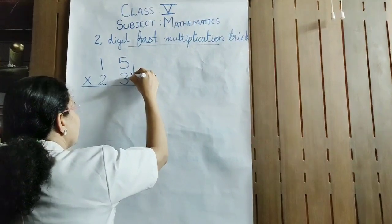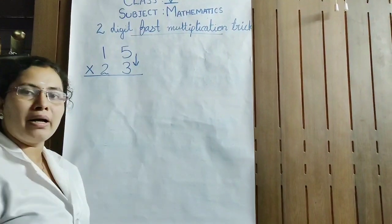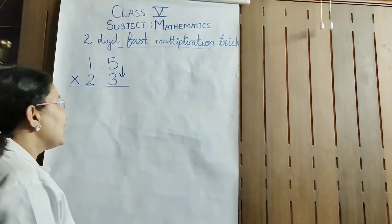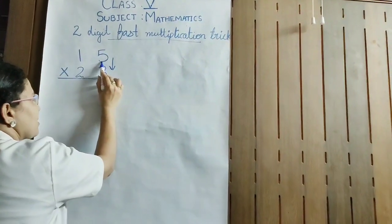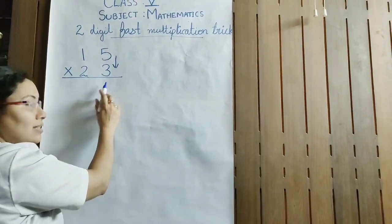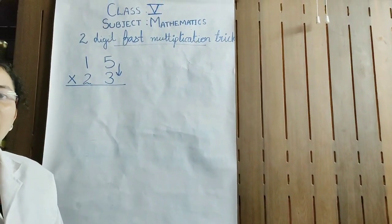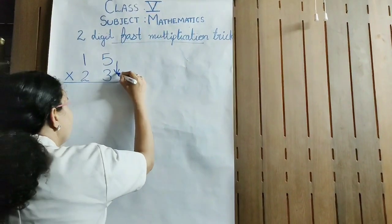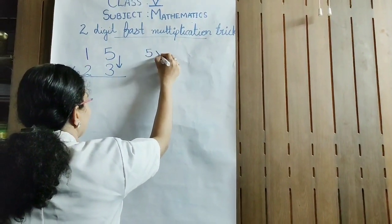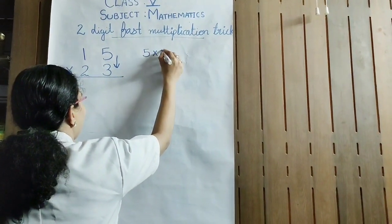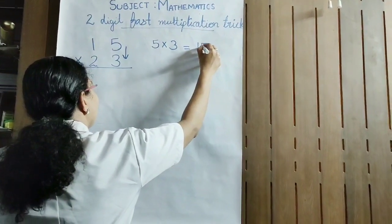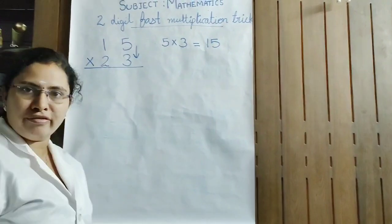For that, you must first multiply the unit place numbers, or 1's place numbers. Here the 1's place number is 5, and here the 1's place number is 3. First you have to multiply these two numbers. So first, you have to multiply 5 into 3. You all know 5 into 3 is 15.